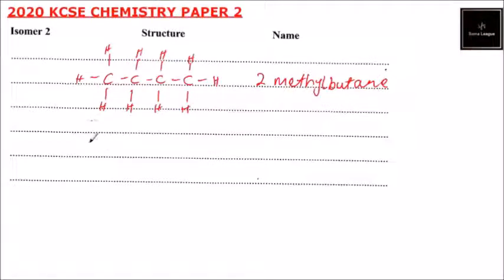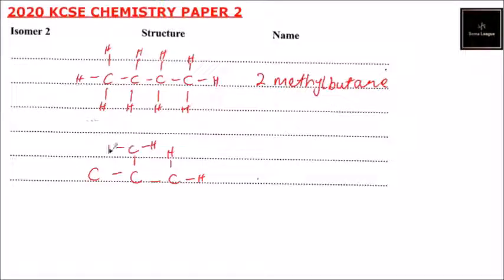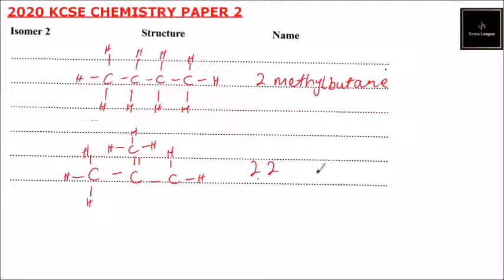The third structure is 2,2-dimethylpropane. It has three carbons in the main chain with two methyl groups on the central carbon, and hydrogen atoms filling the remaining bonds. That is the name and structure of this isomer.